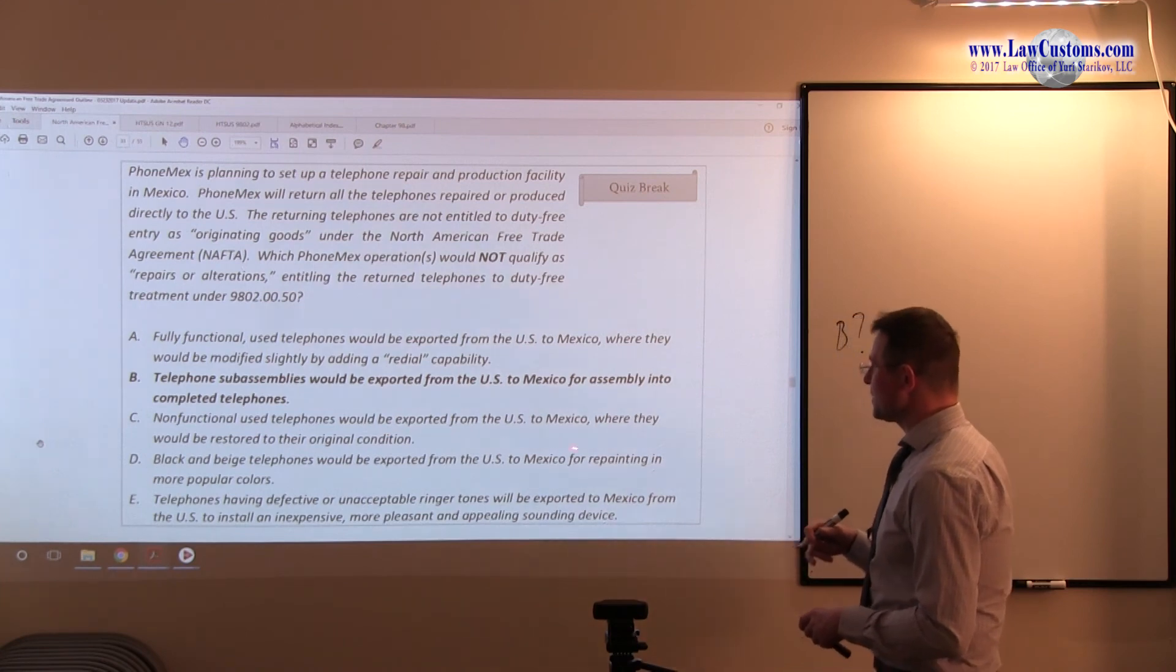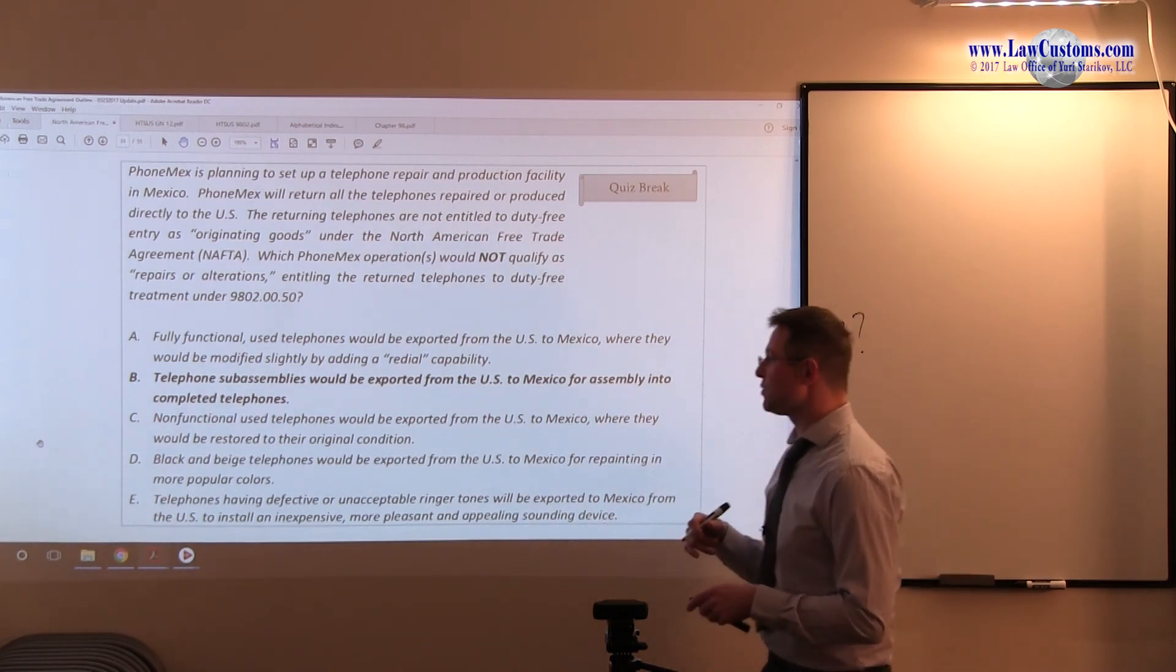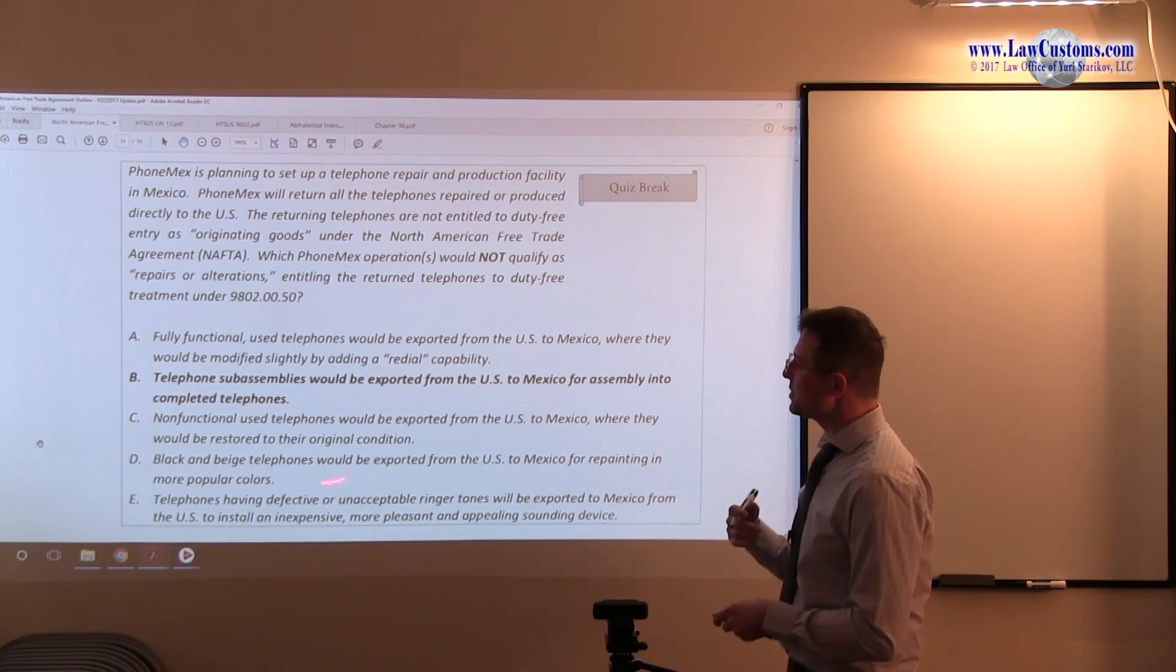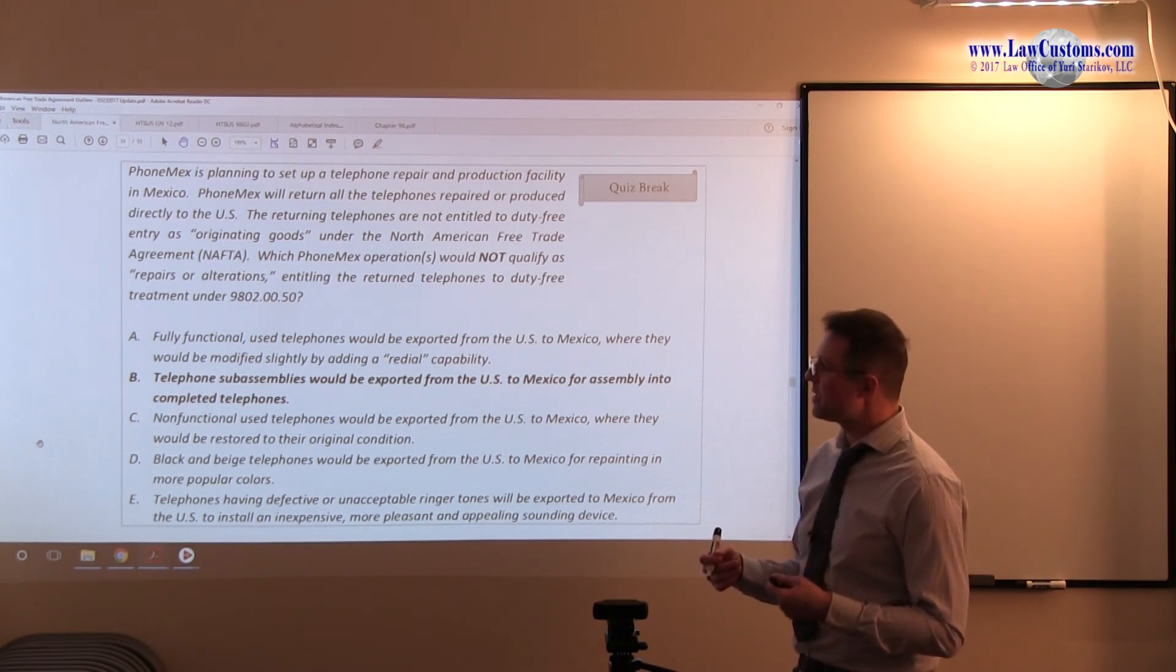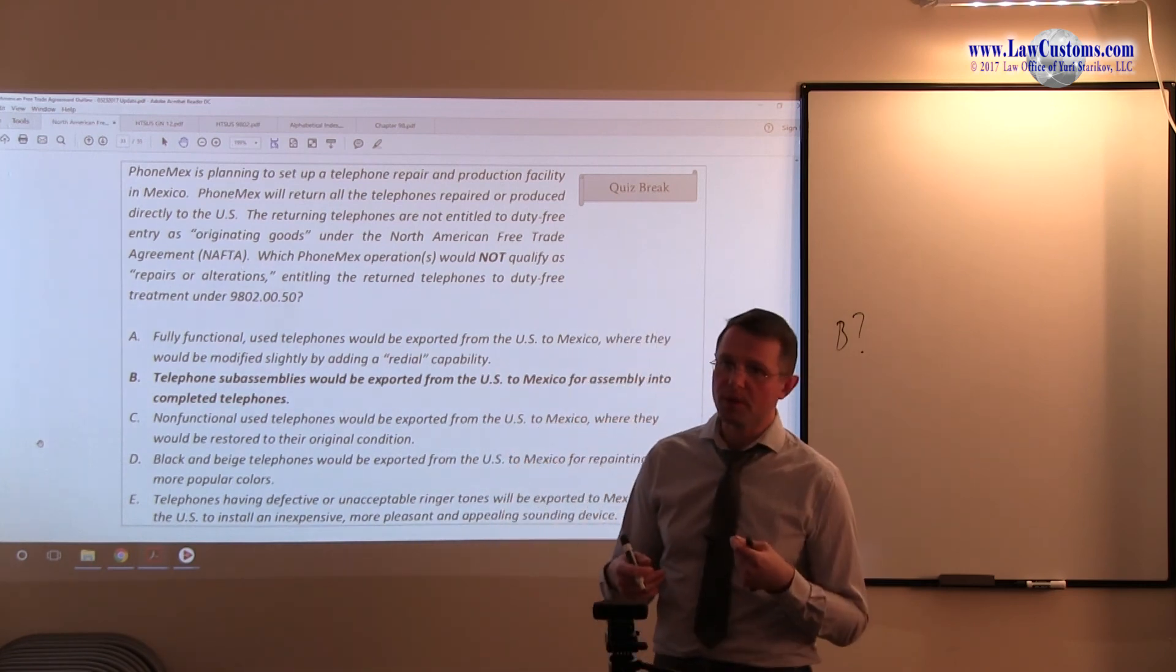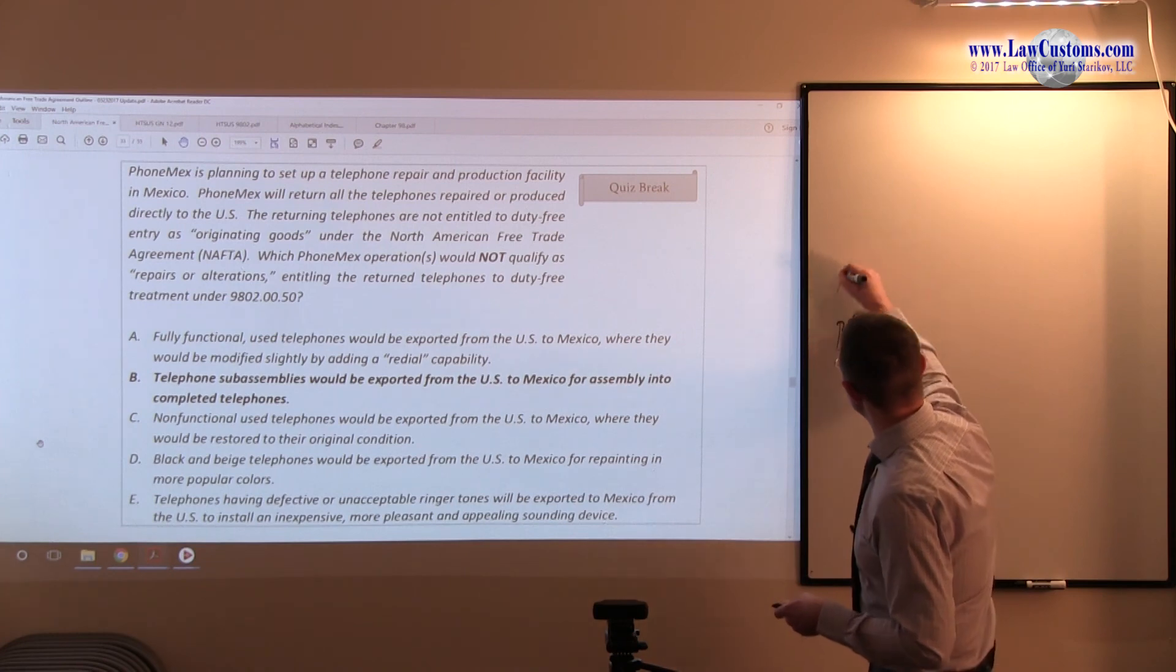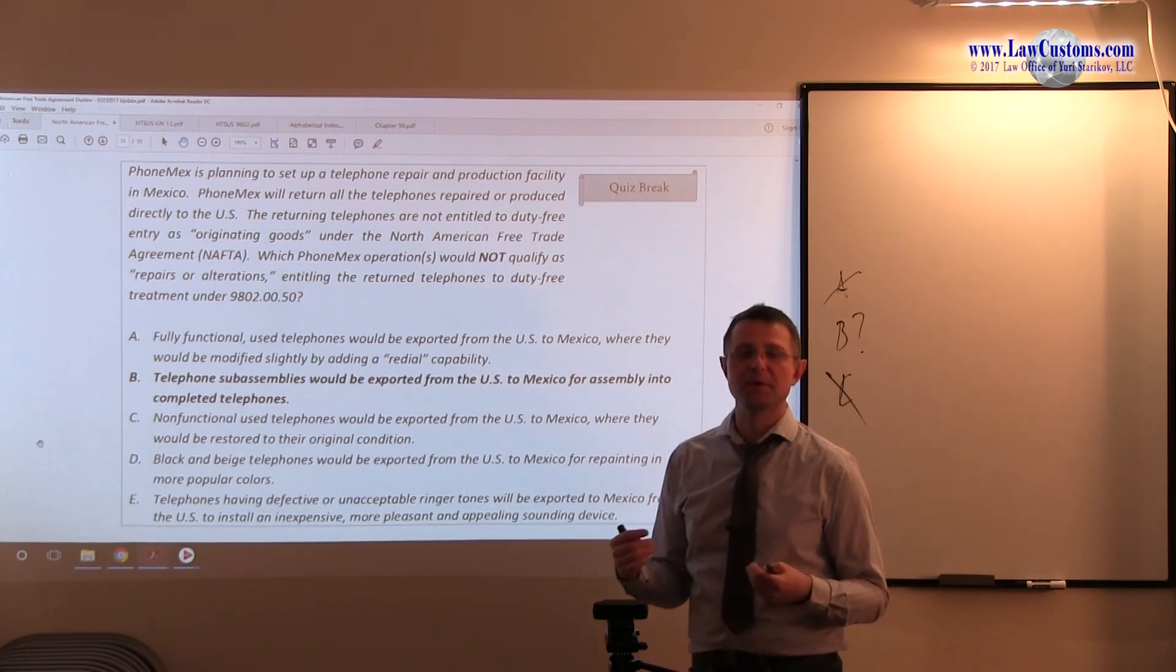C. Non-functional used telephones would be exported to the United States, from the US to Mexico, where they would be restored to their original condition. So, here, you have telephones. Although they are non-functional, they are still complete units. Here, you have incomplete units, you have parts. But here, you have a complete unit, and all that was going to be done to them is the repair. The essential character of the telephone does not change. The end-use does not change. The product itself does not change. It's just being repaired. So, C looks like in line with A, is not our choice, because C provides for something, which does fit that repair or alteration clause.